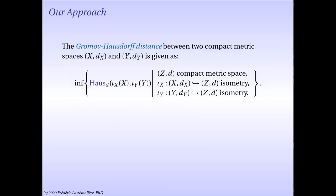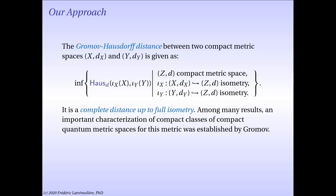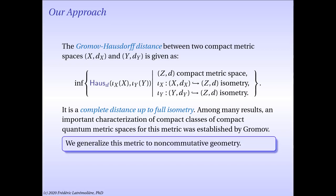Our approach to this problem involved generalizing the Gromov-Hausdorff distance between two compact metric spaces. The Gromov-Hausdorff distance between two compact metric spaces X and Y is given as the infimum over all possible compact metric spaces Z, and all possible isometric embeddings of X and Y in Z, of the Hausdorff distance between these isometric copies. Remarkably, this construction leads to a complete distance up to full isometry between compact metric spaces. Gromov obtained a characterization of compact classes of compact metric spaces. We will see in this lecture how to generalize this distance to noncommutative geometry.